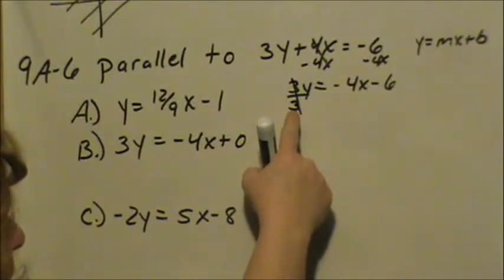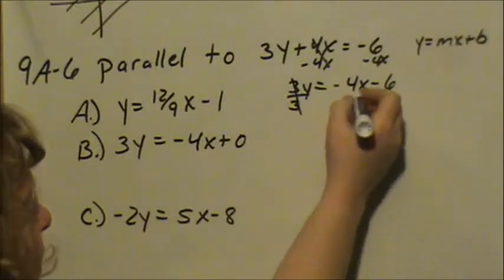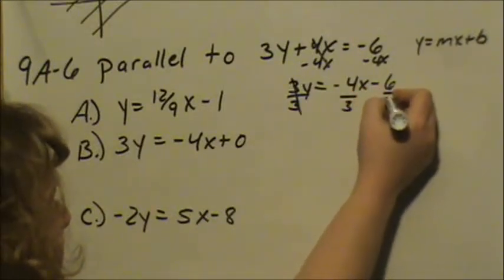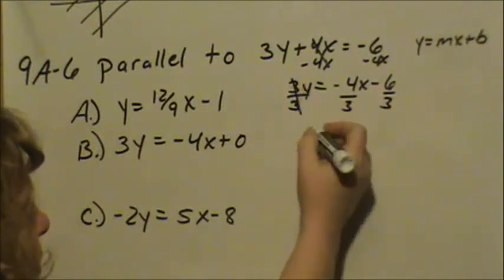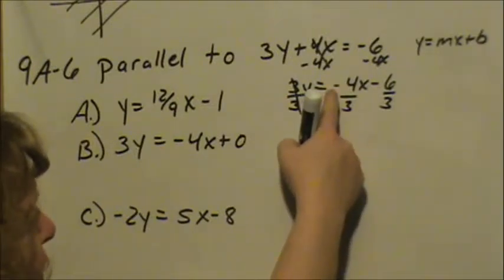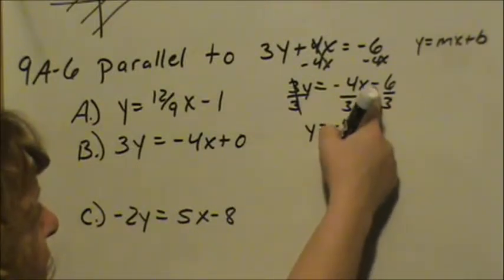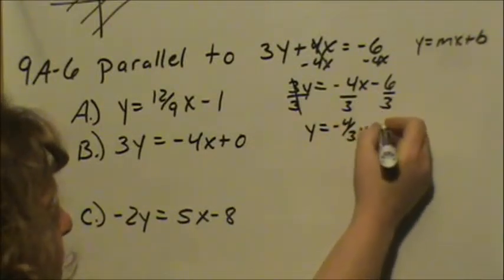In algebra, whatever you do to one thing, you have to do to everything. So if I divide this by 3, each one of these has to be divided by 3. So now our 3s cancel on the left, so we have y equals, don't forget your negative, negative 4 thirds x, and negative 6 divided by a positive 3 is a negative 2.